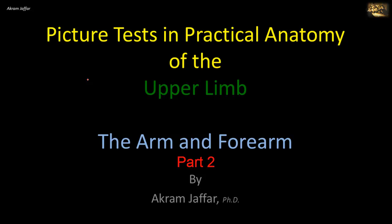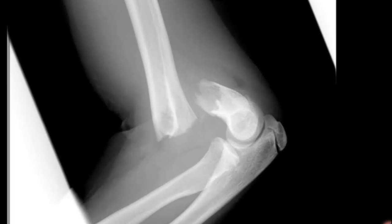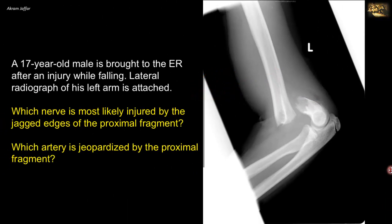Now I will deal with the anatomy of the arm and forearm. A 17-year-old male is brought to the ER after an injury while falling. A lateral radiograph of his left arm is attached, showing a supracondylar fracture of the humerus. Which nerve is most likely injured by the jagged edges of the proximal fragment? And which artery is jeopardized by the proximal fragment?